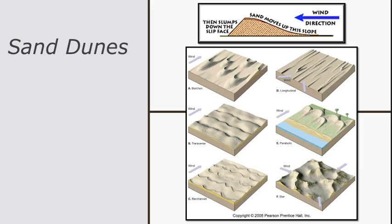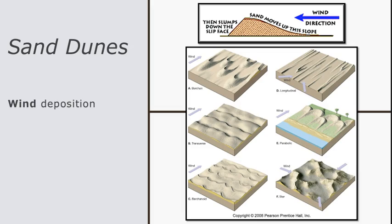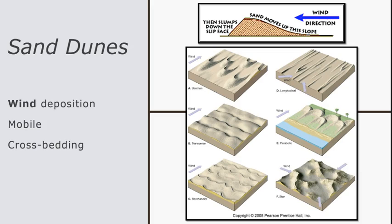Sand dunes are the most prominent landforms constructed by wind deposition. Like sediment deposited in stream channels, sand on sand dunes will continue to move so long as there is wind and a lack of vegetation to anchor the sediment. Sand grains roll and skip up the windward side of the dune and are redeposited on the leeward side. This forms the cross-bedding characteristic of wind-deposited sediment. When the leeward side exceeds the angle of repose for sand, it fails as a sand slump. Different types of dunes form based on the availability of sand and the direction or directions of the wind.